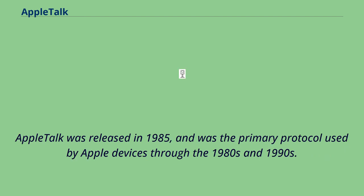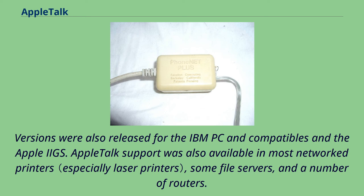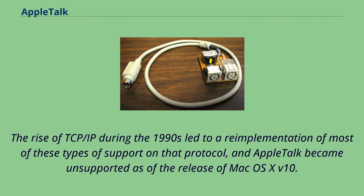AppleTalk was released in 1985 and was the primary protocol used by Apple devices through the 1980s and 1990s. Versions were also released for the IBM PC and compatibles. AppleTalk support was also available in most networked printers, some file servers, and a number of routers. The rise of TCP/IP during the 1990s led to a re-implementation of most of these types of support on that protocol.